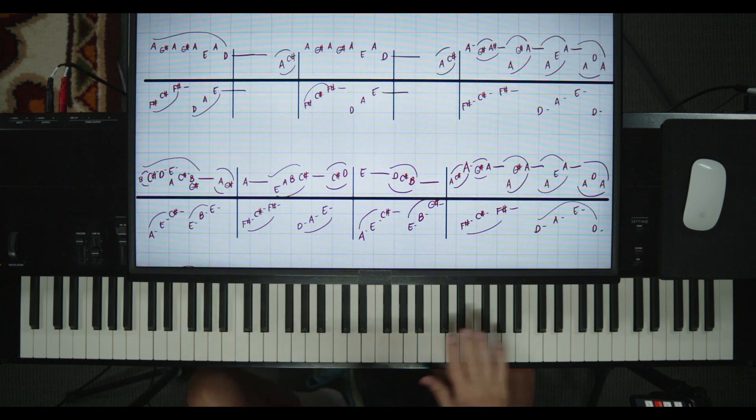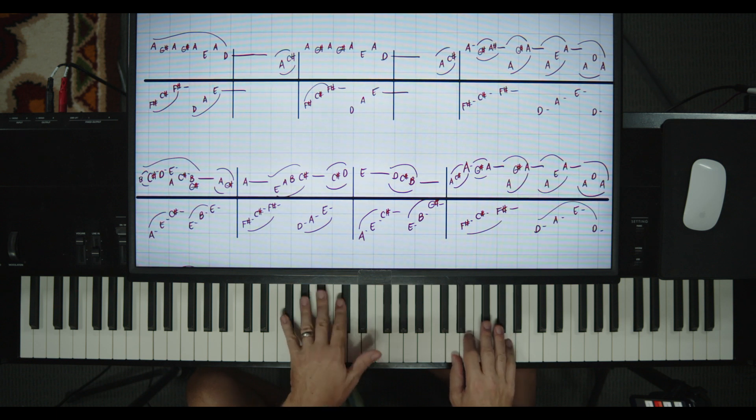All right, so the right hand's up here. Here's middle C, the next C, so you're actually up here. A, G sharp, A, G sharp, A, E, A, D. So one little five-finger pattern is all you need. Or five-finger position. Okay, so you put your hands together.